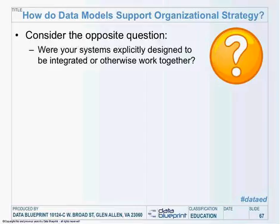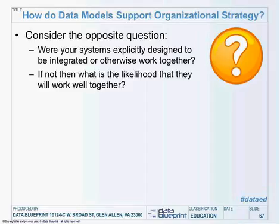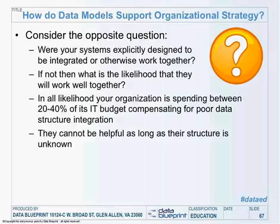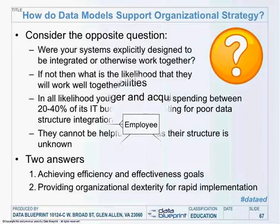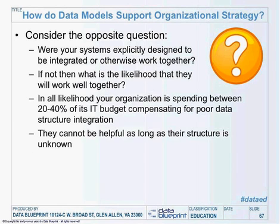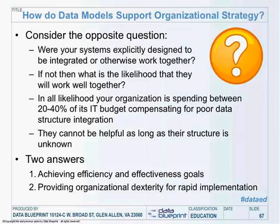How do data models support organizational strategy? First, you've got to consider the opposite question: were your systems explicitly designed to be integrated or to work together? Of course, the answer is no. So if they weren't designed to work together, what's the likelihood that they just will work together? Absolutely none. Even if they're explicitly designed to work together, it's going to be problematic. We're seeing 20% to 40% of all IT budgets compensating for this poor data structure integration. The systems can't be helpful to each other as long as the structure is not known. We need to provide the organization the dexterity for rapid implementation.